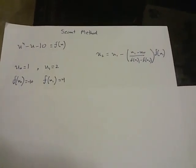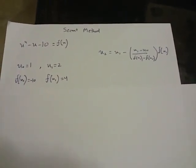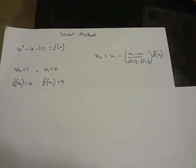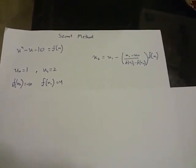We have to solve it using the secant method, accurate up to one decimal place. That means it will be 0.0 and then something.